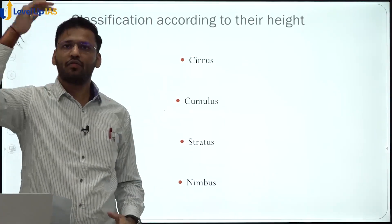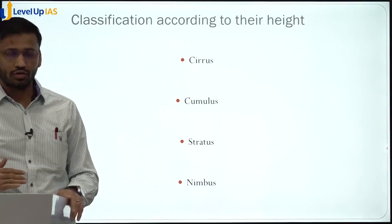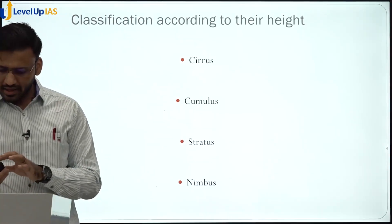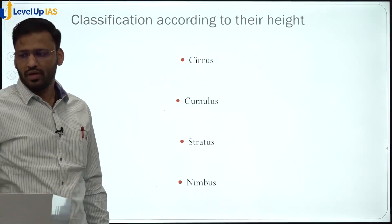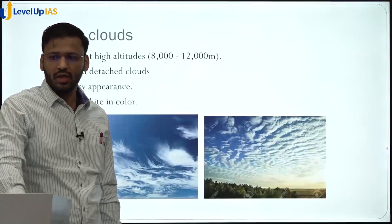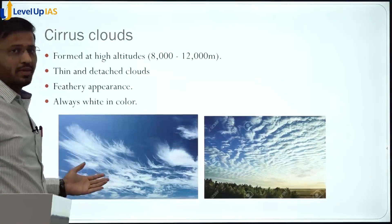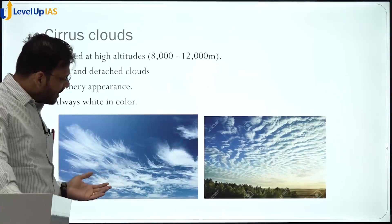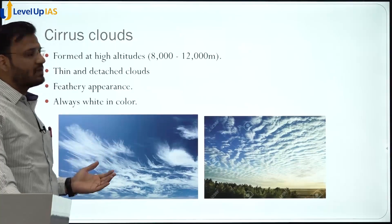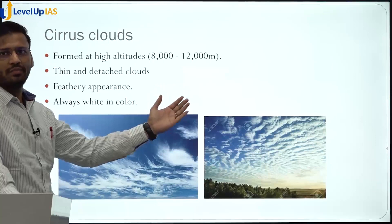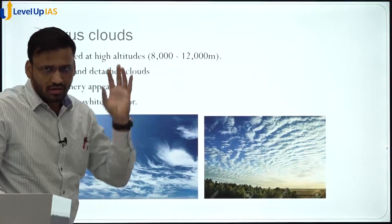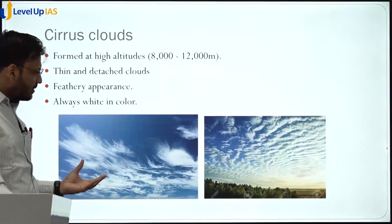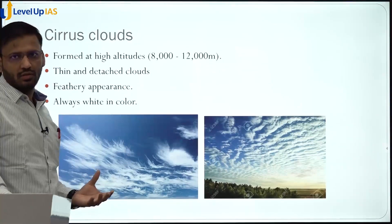So cirrus, cumulus, stratus, and nimbus are the four major types of clouds according to their height. Now let us understand their characteristics one by one. The first cloud is the cirrus cloud — you must have seen these types of clouds in the sky. They are like a feathery cloud, the highest clouds, found at eight thousand to twelve thousand meters, stretching toward the tropopause. They are very thin and detached clouds.